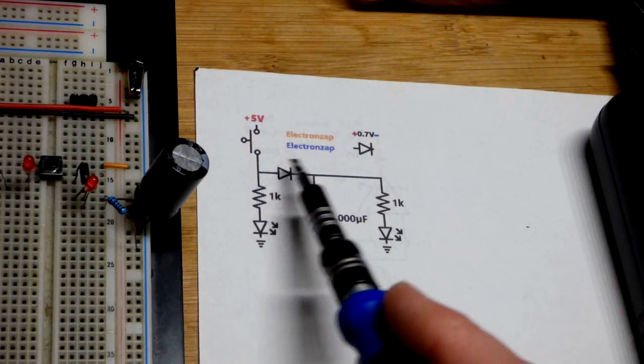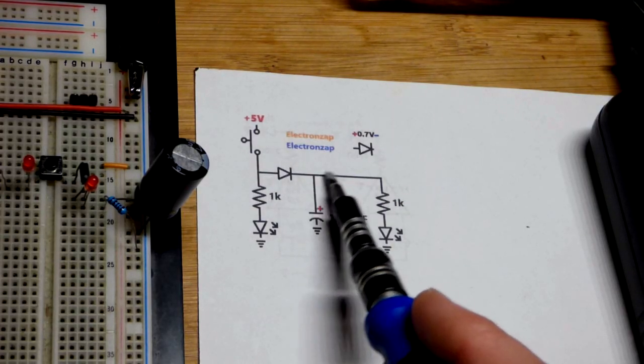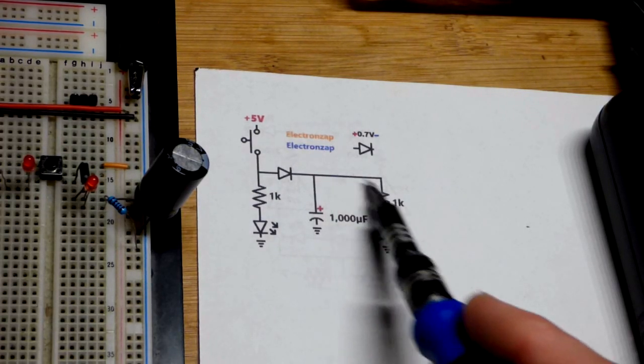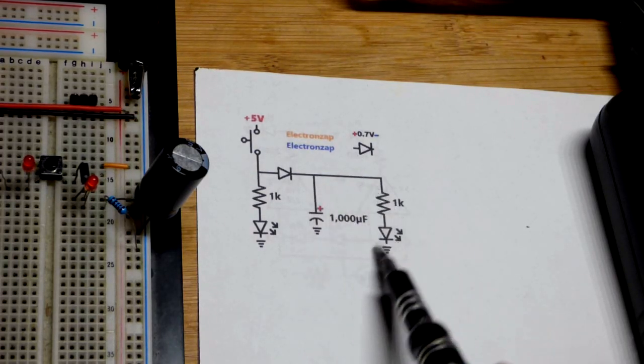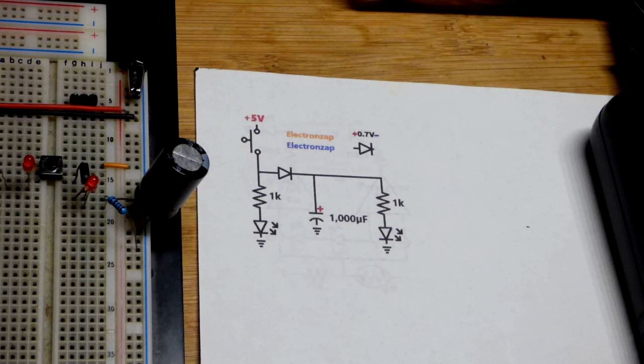The capacitor has stored charge. Stored charge cannot go that way. It can only go through that resistor and LED. As the capacitor discharges, that LED is going to fade off right there.